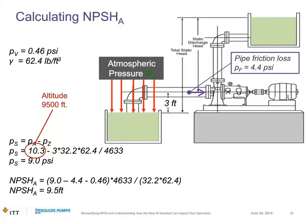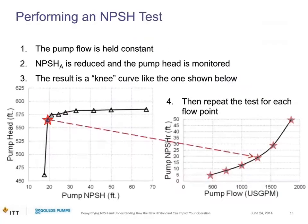Now a curve ball: the suction tank is below the pump — a lift condition — still open to atmosphere, but at an altitude of 9,500 feet. Because of the altitude, atmospheric pressure is lower at 10.3 psi. The suction pressure equation is P_atmospheric minus the static elevation (since the tank is below the pump). Converting, you get P_s = 9.0 PSI. Plugging in: 9.0 minus 4.4 PSI suction pipe loss minus 0.46 PSI vapor pressure, converted to feet, gives NPSH available of 9.5 feet.